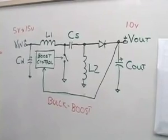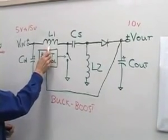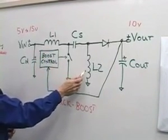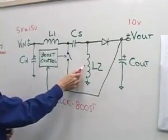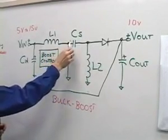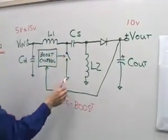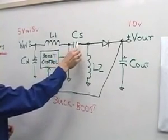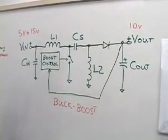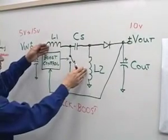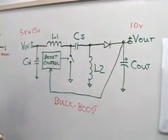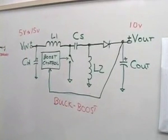The SEPIC converter is characterized by the use of two inductors, one going to the input and one going to the ground. These are connected by a coupling capacitor, which basically shorts the AC signal from one inductor to the other inductor. Effectively, this puts L1 and L2 in parallel for an AC point of view, and for the power transfer.